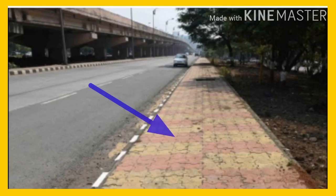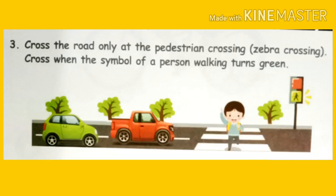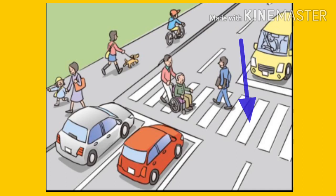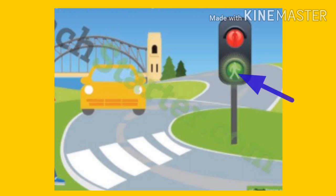Cross the road only at the pedestrian crossing — zebra crossing. Cross when the symbol of a person walking turns green. To cross the road, we must use the pedestrian crossing. That is called the zebra crossing, which has white stripes. We must cross only at those marked places. We should cross only when the green pedestrian signal turns on.